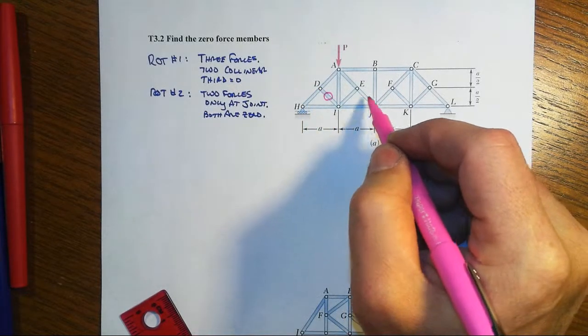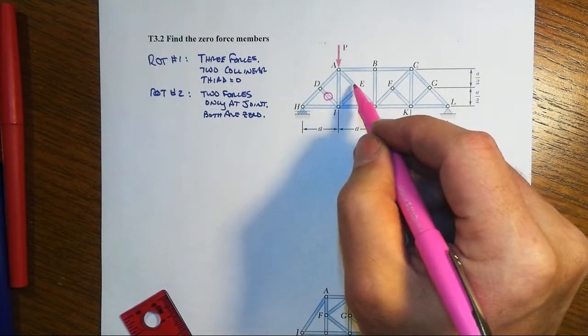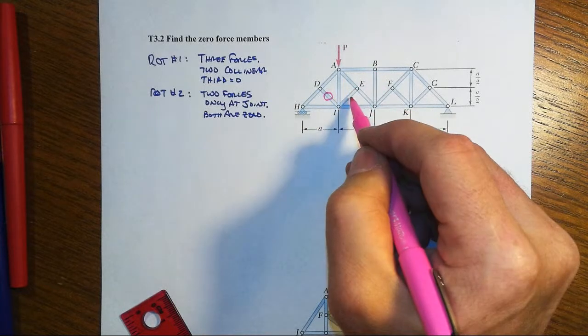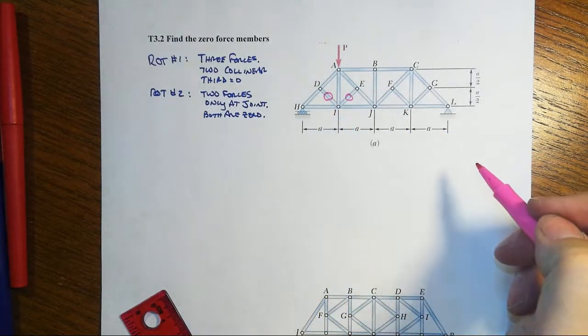Likewise, when we look at joint E, another T-type joint, the third one must be zero.